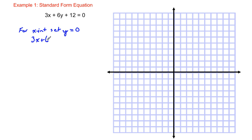So we're going to get 6 times 0 plus 12, which equals 0. So we're going to get 3x equals negative 12. So x equals negative 4, just dividing both sides by 3. So you know that the line is going to cross the x axis at negative 4.